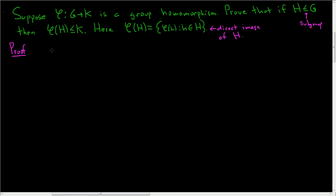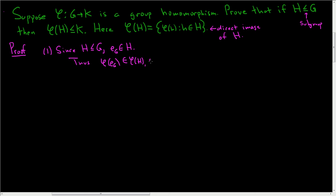We have to show three things. One: that it's nonempty. Two: that it is closed under the group operation. And three: that it is closed under inverses. We'll start with one, showing it's nonempty. Since H is a subgroup of G, the identity element in G is in H. Thus, phi of the identity element in G, which is the same as the identity element in H, is in phi of H. So phi of H is not empty.